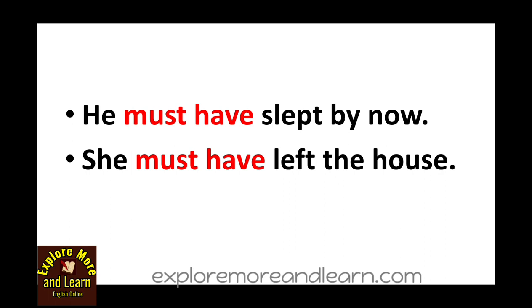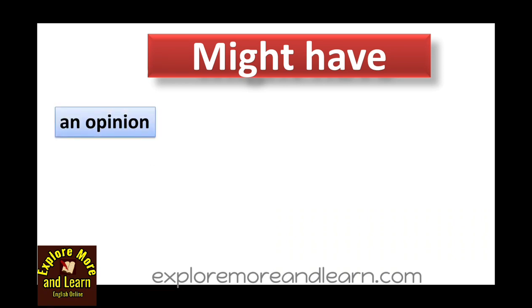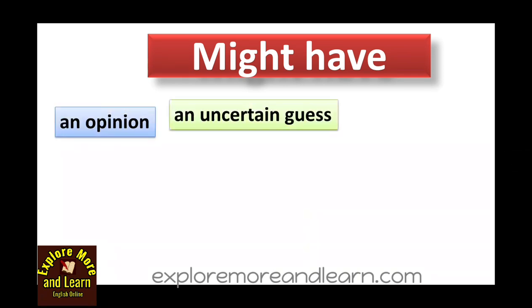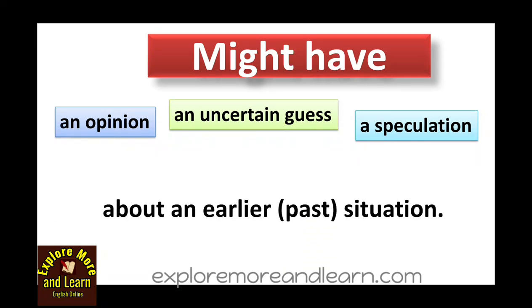You use must have when you are sure about an action which has happened in the past and that action has definitely happened. Now let's talk about might have. Might have expresses an opinion, an uncertain guess, or a speculation about an earlier past situation. We use might have to make a guess about a past action when we are not sure about it.